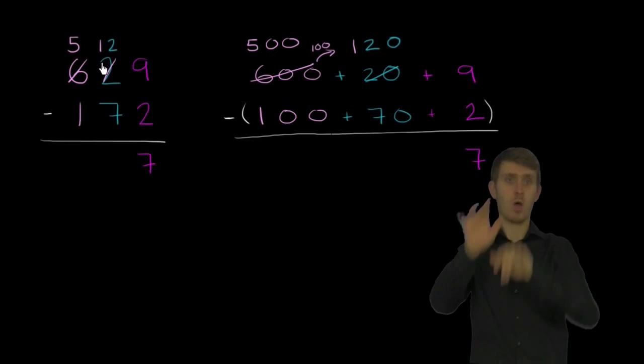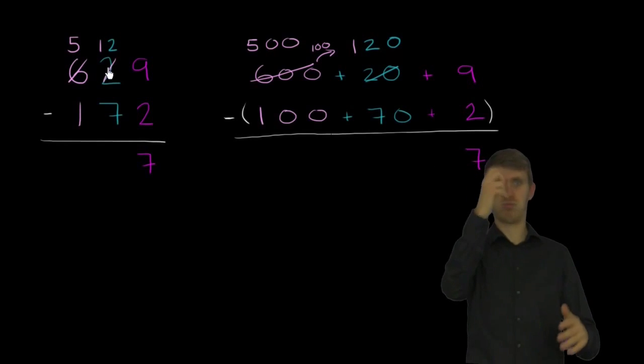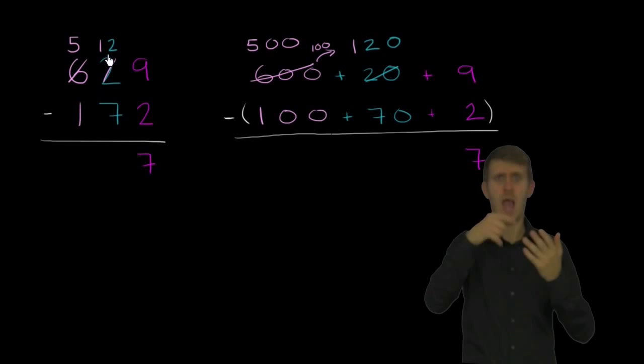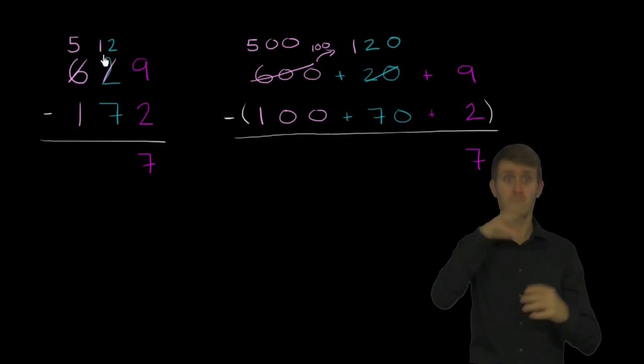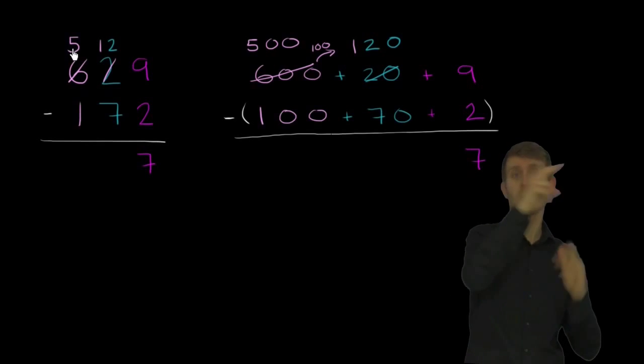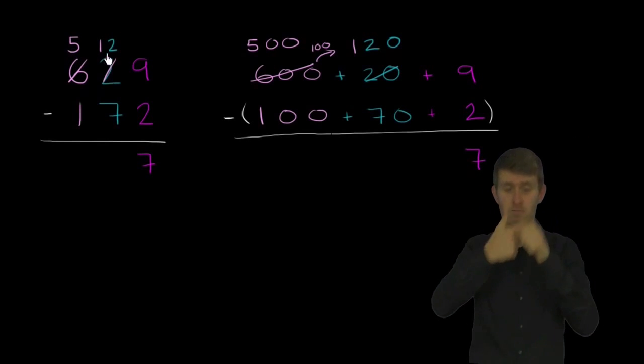There's no magic here. This is often called borrowing, where you say, hey, I took a 1 from the 6 and I gave it to the 2, but wait, why did this 2 become a 12? Why was I able to add 10? Well, you've added 10 tens, or 100. You took 100 from here. So 600 became 500, and then 20 became 120.